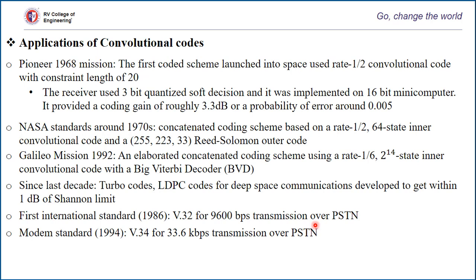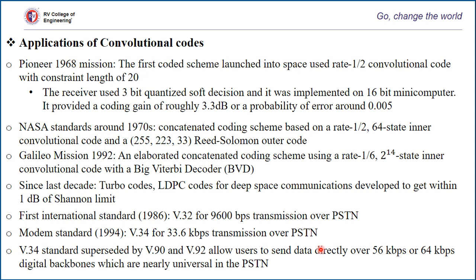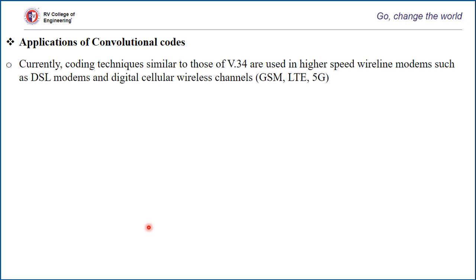Initially, it started with the V32 standard at around 9.6 kbps transmission, using an 8-state code. It was later developed into the V34 standard at 33.6 kbps transmission, which used a 16-state 4-dimensional trellis-coded modulation scheme, with an optional 32-state 4-dimensional trellis code also specified in the standard. When digital backbones became prevalent, there was no longer a need for these analog modem codes, and the V90 and V92 standards superseded V34.